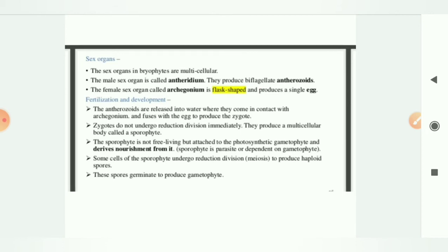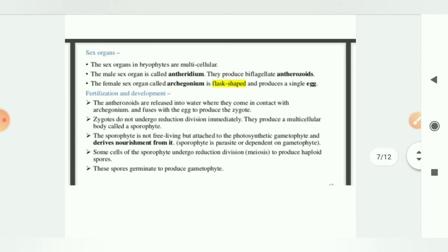They are attached to the gametophyte which are photosynthetic. If gametophyte are photosynthetic, it means they will prepare their food. So from here, your sporophytes will take nourishment from it. Then some cells of sporophyte will undergo reduction division, that is meiosis, and finally it will produce haploid spores. We know that in case of meiosis, chromosome number becomes half. If it is 46, it will become 23. And these spores, they germinate finally to produce gametophytes.